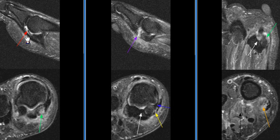The plantar plate of the great toe is torn with a tear of the proximal portion of the sesamoidal phalangeal ligament.